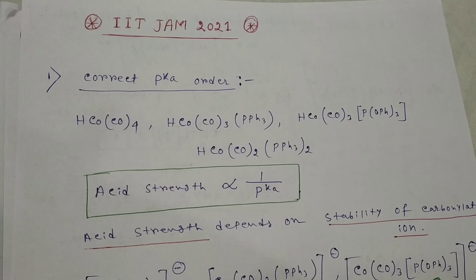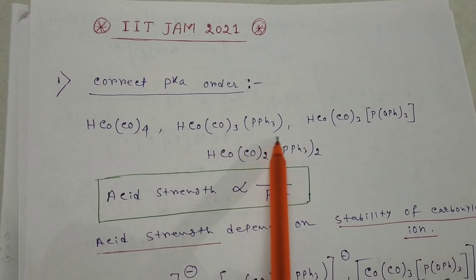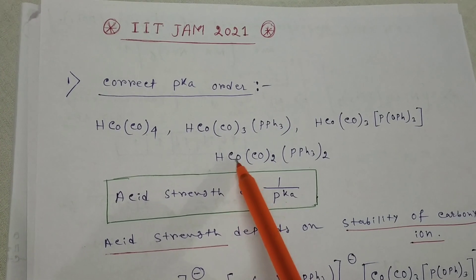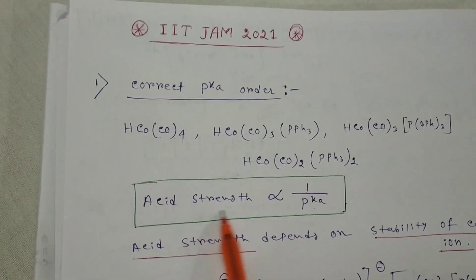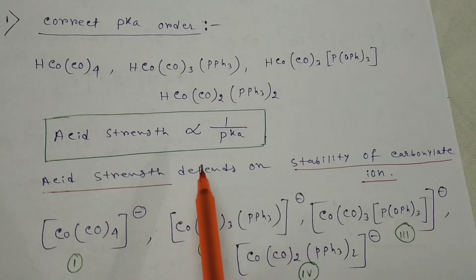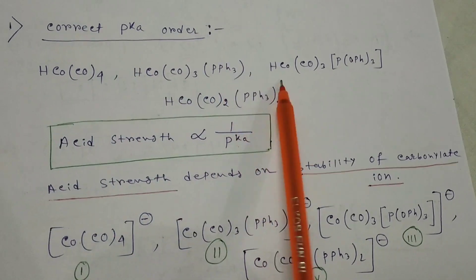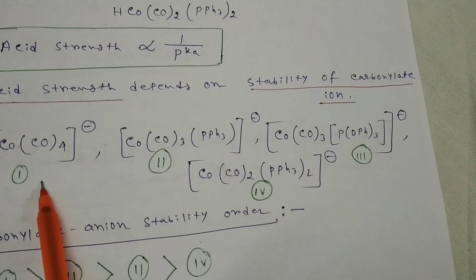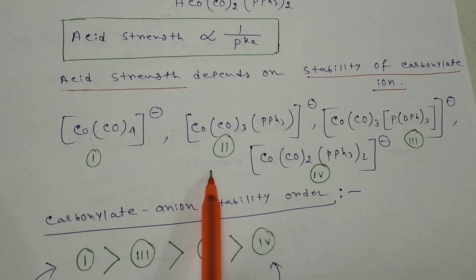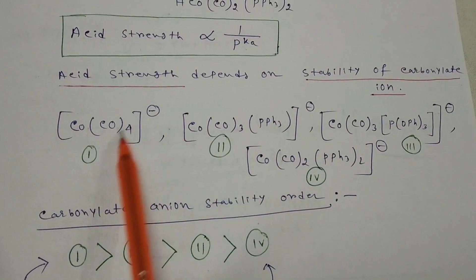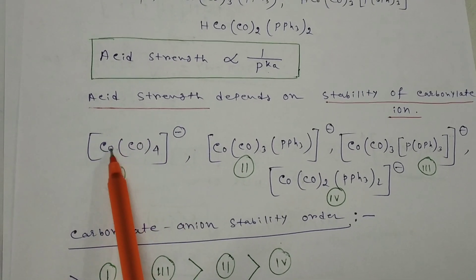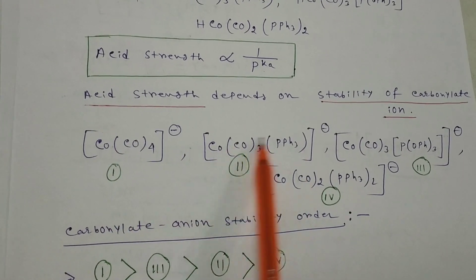The first question is correct pKa order of these complexes: HCo(CO)4, Co(CO)3(PPh3), Co(CO)3(P(OPh)3), and Co(CO)2(PPh3)2. Here cobalt is the metal and CO is carbon monoxide. Acid strength is inversely proportional with pKa value and proportional with Ka value. Acid strength depends on the stability of the carbonylate anion.